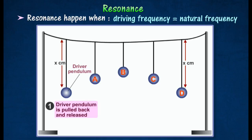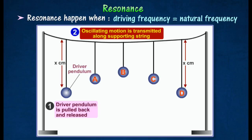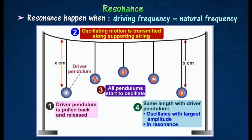For example, the driver pendulum in the figure is pulled back and released. The oscillating motion is then transmitted along the supporting string, causing all the pendulums to start oscillating. Pendulum D, which has the same length as the driver pendulum, oscillates with largest amplitude and is said to be in resonance.